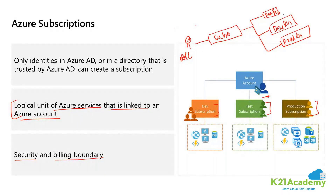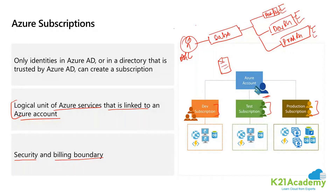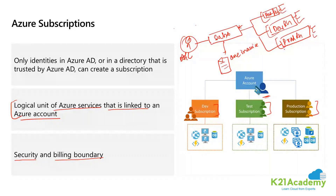After the subscription, the next abstraction layer is the resource group, and inside these resource groups the team starts creating resources. When an invoice gets generated for the resources being used against this subscription, only one invoice will be generated. So if he wants a separate invoice for Test RG, Dev RG, and Prod RG — that is not possible.